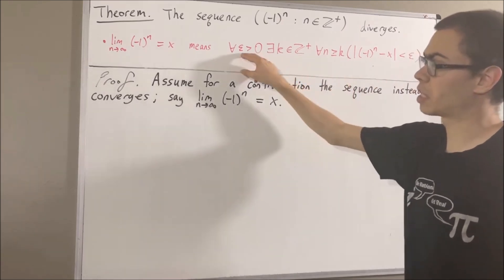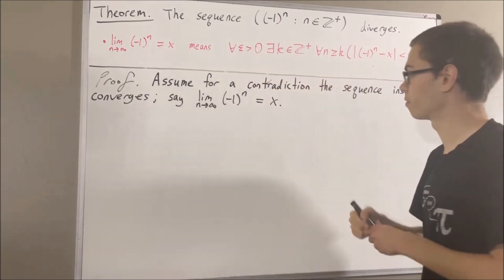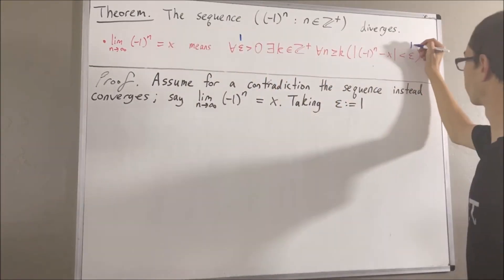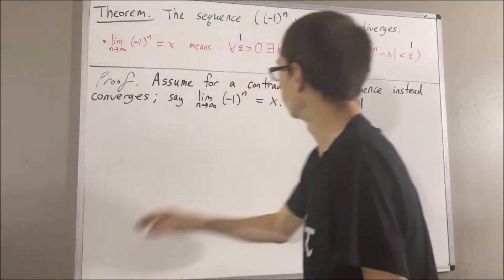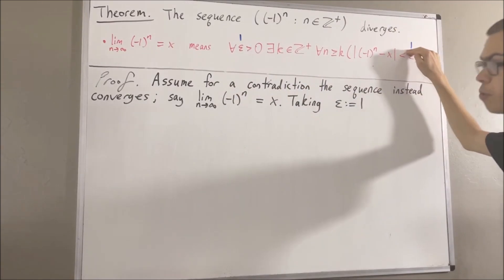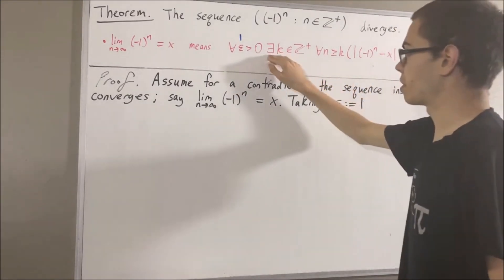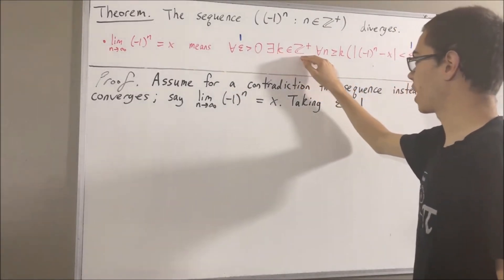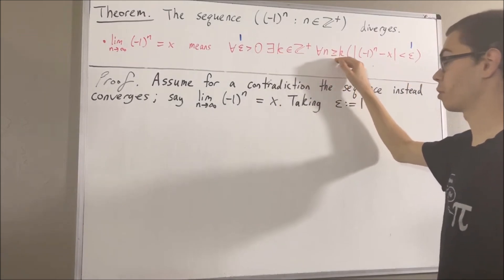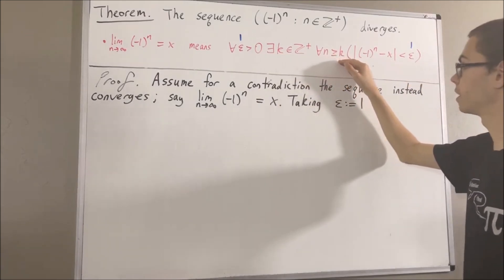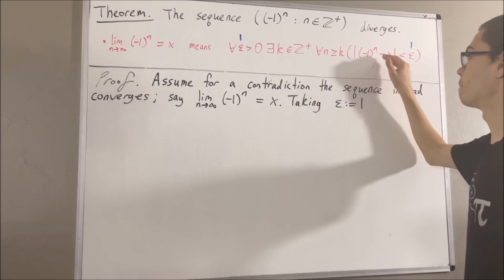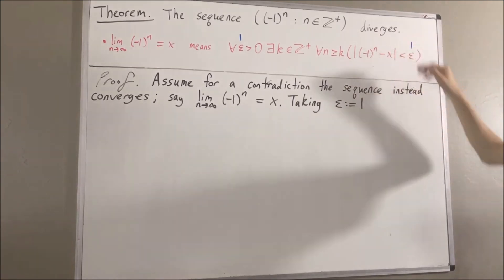So, taking epsilon to be 1, we have that there is some positive integer k, such that for all positive integers n greater than or equal to k, the absolute value of negative 1 to the power of n minus x is less than 1.